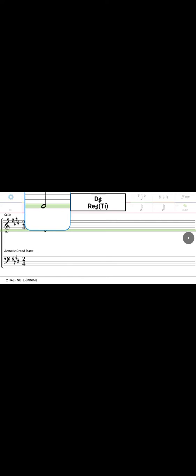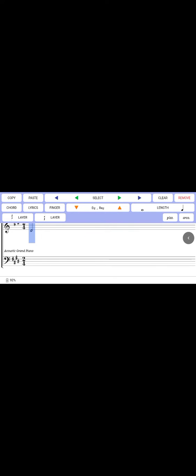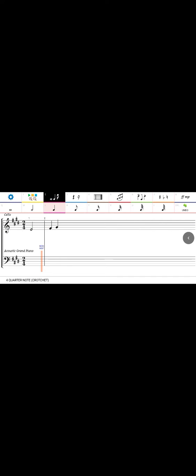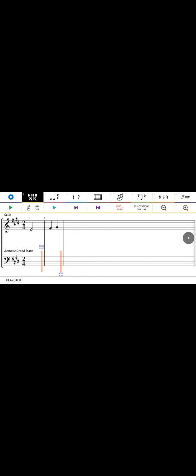Let me start with a minim on Do. Use the yellow up/down arrows to move to the correct pitch. Then choose a crochet and place it. The bar line will appear automatically. You can also manually insert a bar line by touching the bar line tool and selecting the first option. To play back, press the green play button in the top right — first row, second icon.